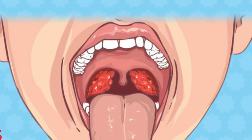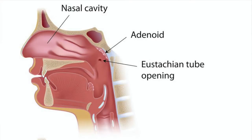Tonsils can be seen in the throat of the child — if the child opens the mouth wide you'll see two small lumps on the side of the throat. Adenoids are similar to tonsils, but because they are present at the back of the nose we cannot see the Adenoids from the mouth or through the nose.